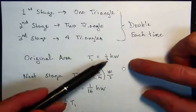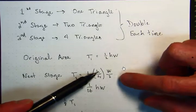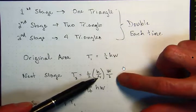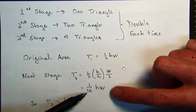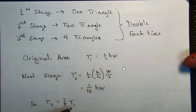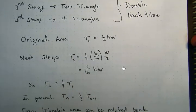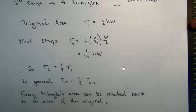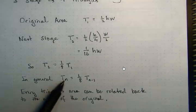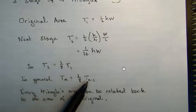So the original area would be one half the base times the height, one half height times width. And we saw that the next triangle was a quarter of the height and half the width. So we get this right here. Or in other words, the area of the second triangle is one eighth the area of the previous triangle. And Archimedes was choosing his triangle so that relationship held every time. So in general, the area of a triangle on the nth stage is going to be one eighth the area of the triangle that you had on the previous stage.